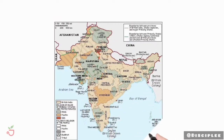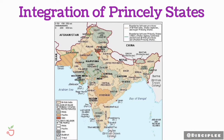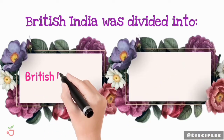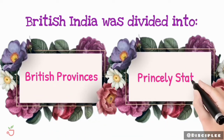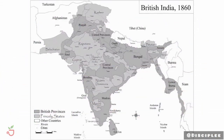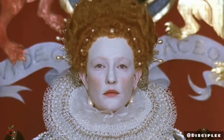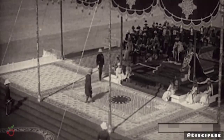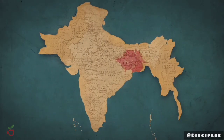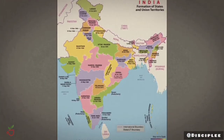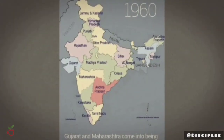Today we will talk about the integration of princely states. Before independence, India was divided into two categories: British Indian Provinces and princely states. The British Indian Provinces were directly under the control of the British government. On the other hand, several large and small states ruled by princes — called princely states — enjoyed some control over their internal affairs as long as they accepted British supremacy. This setup was called paramountcy.